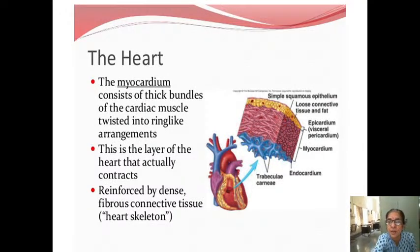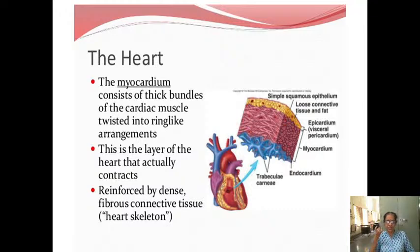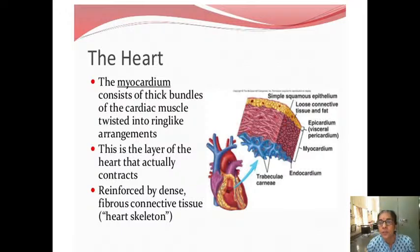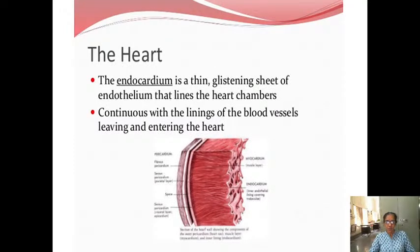The myocardium consists of thick bundles of cardiac muscle arranged in ring-like formations. That is the one which is contracting. The myocardium has the muscle — it is the thicker layer and is the layer of the heart that actually contracts. It has got dense fibrous connective tissue. The myocardium also contains pacemaker tissue and connective tissue of the heart.